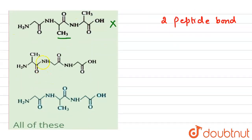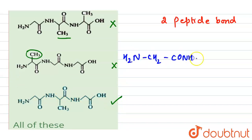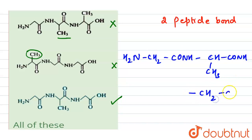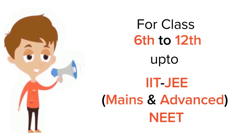Another option is also incorrect because the CH3 placement is wrong — in our structure, the CH3 belongs to the alanine in the middle. The correct option is the one that breaks down as: H2N-CH2-CO (glycine), then NH-CH(CH3)-CO (alanine), then NH-CH2-COOH (glycine). All other options are incorrect. This is our correct answer.